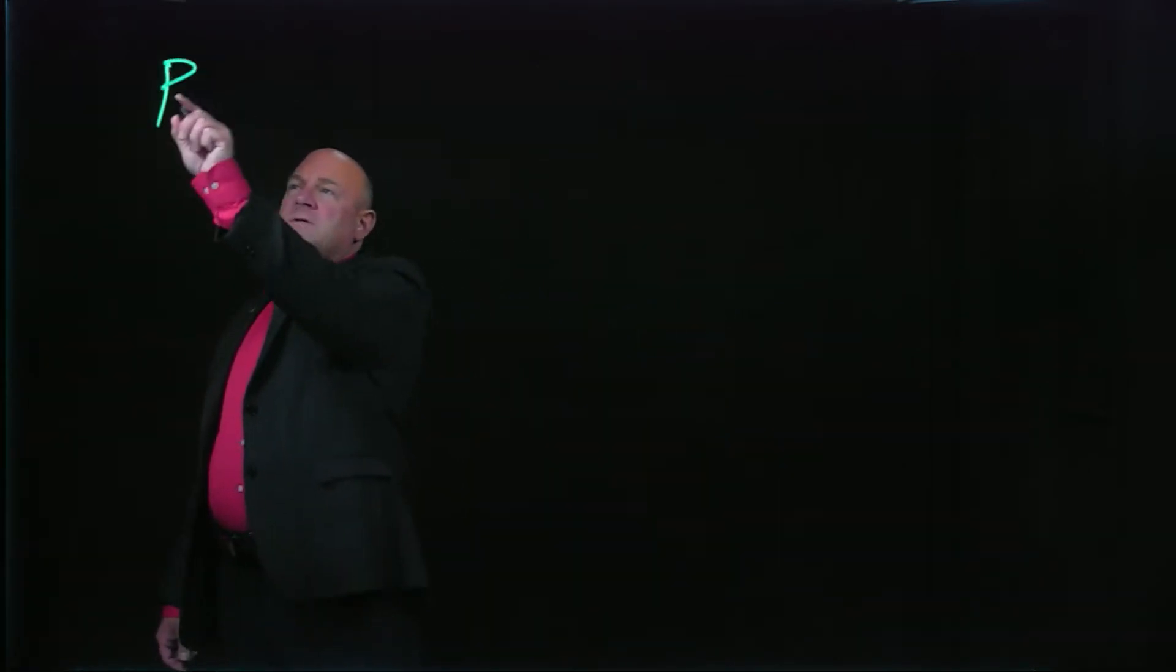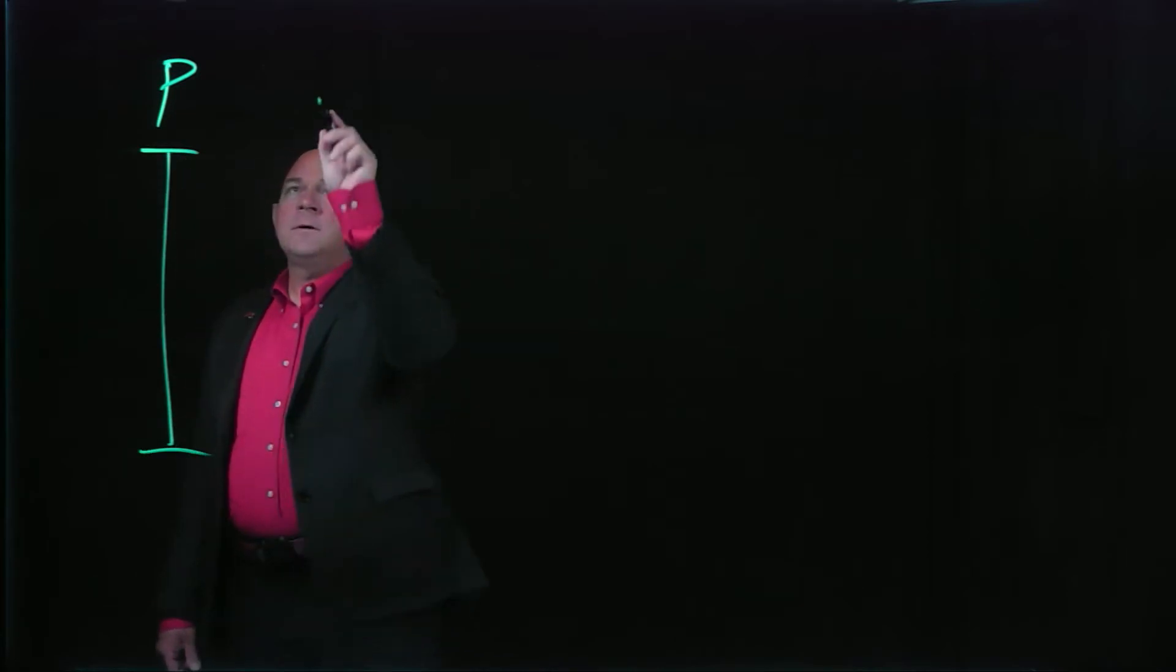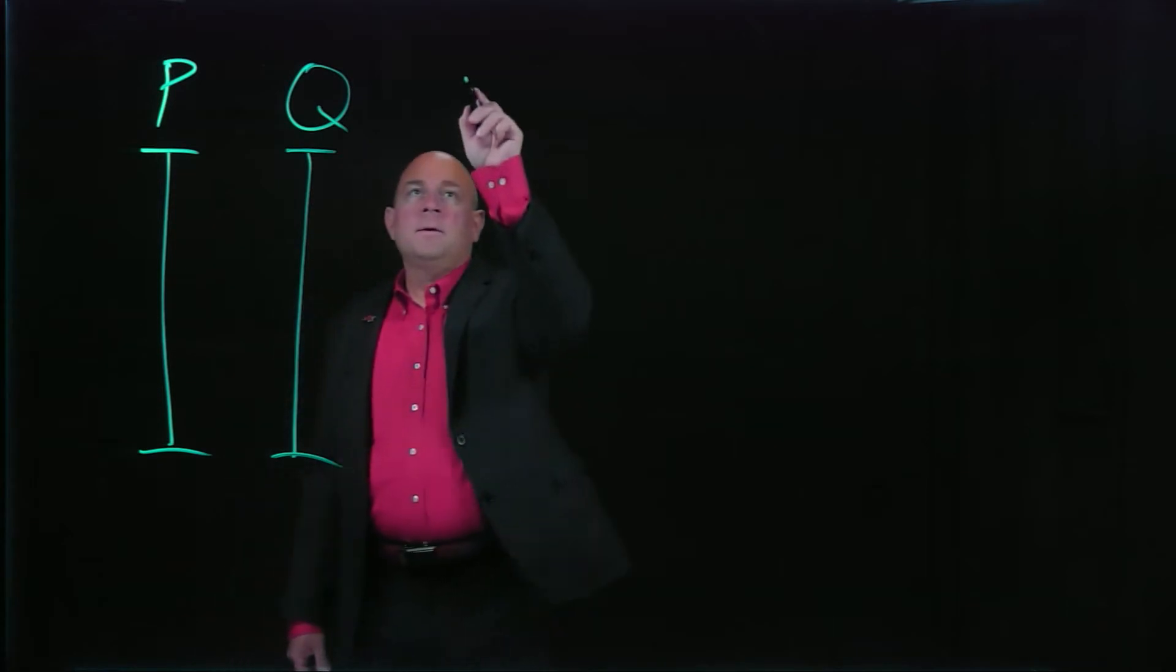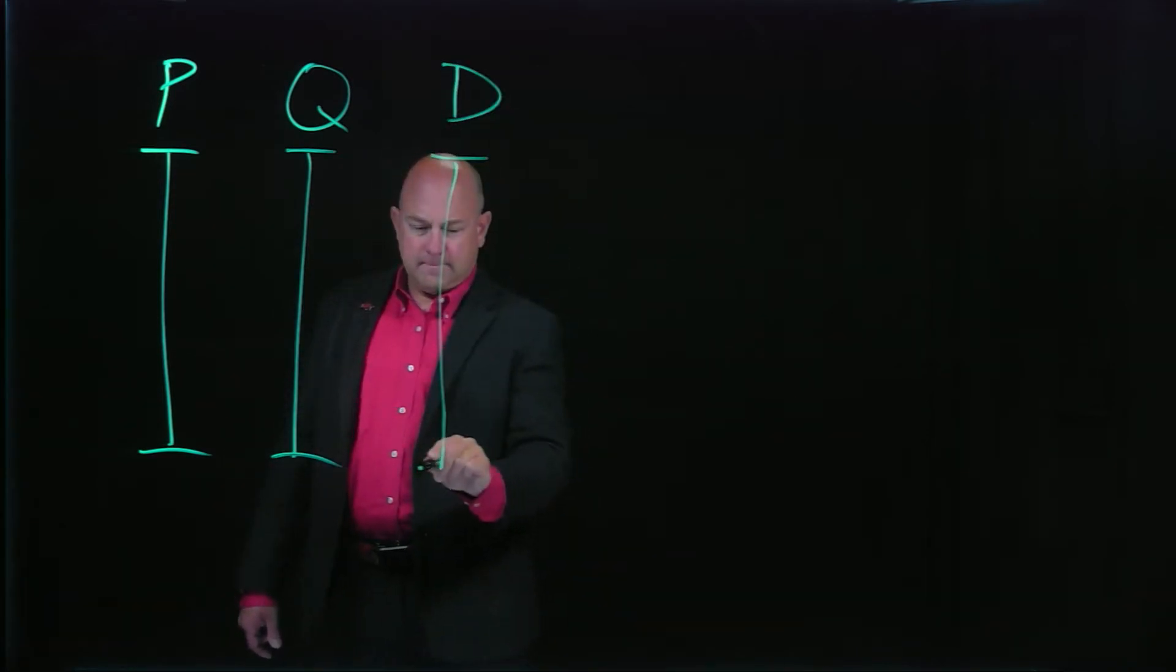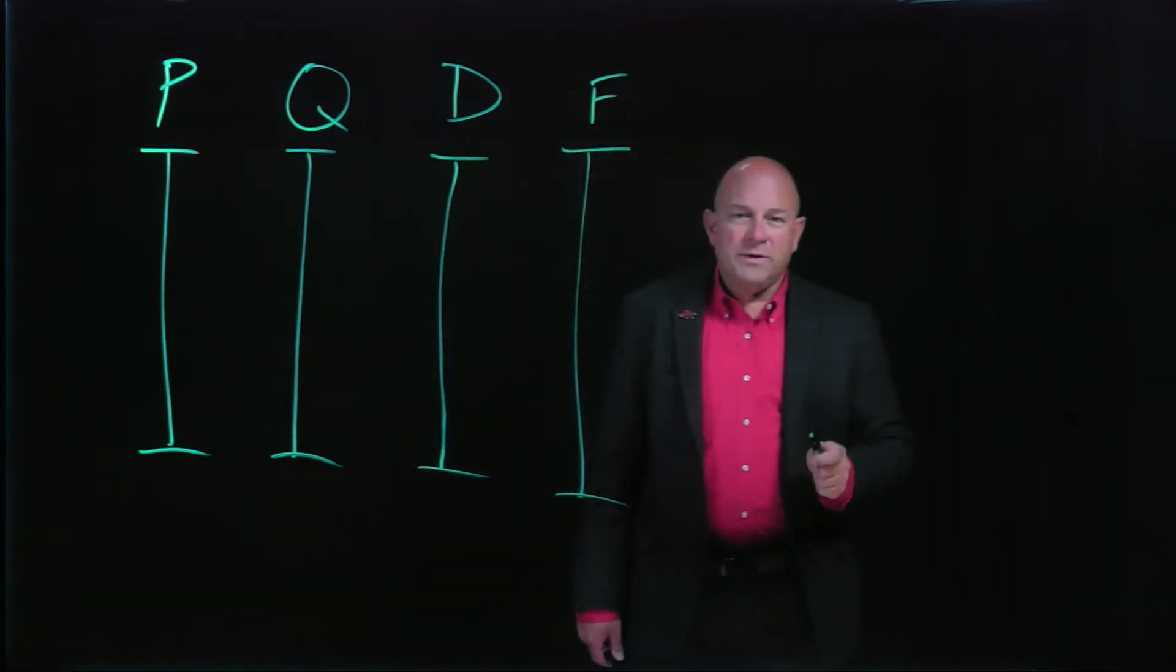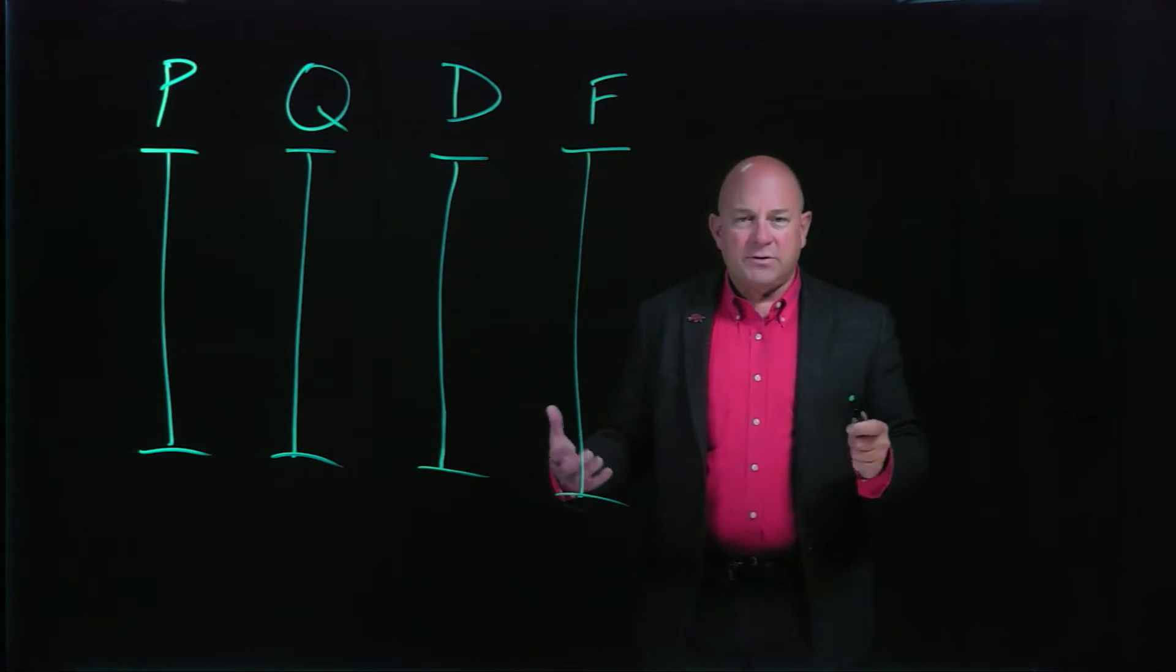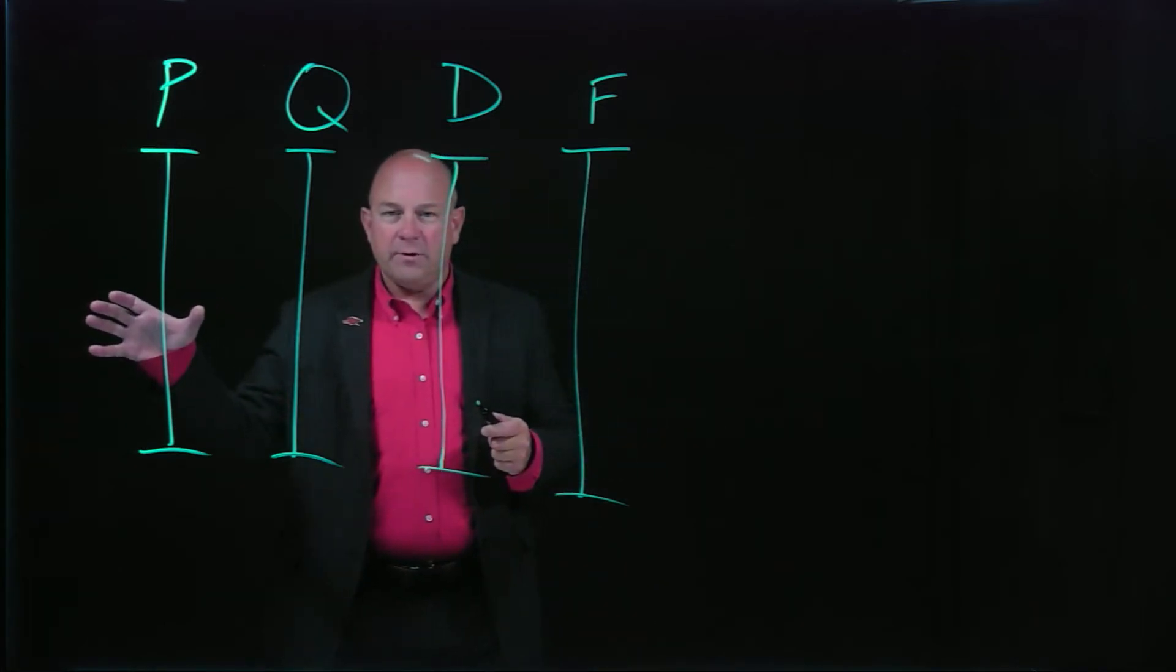So you probably recall that we said that four primary dimensions of competition include price, quality, delivery, and finally flexibility. Price is fairly straightforward—it's either high or low price.